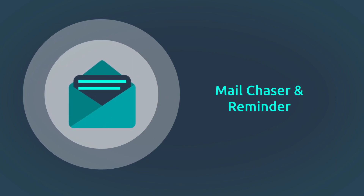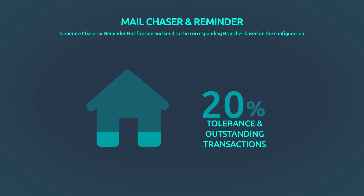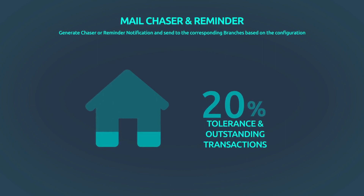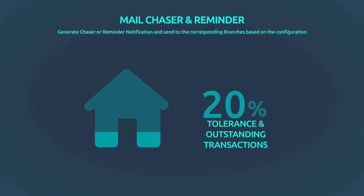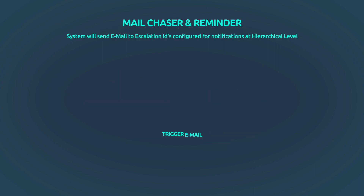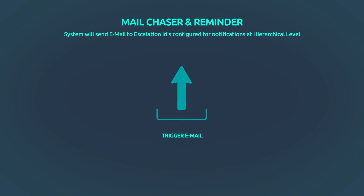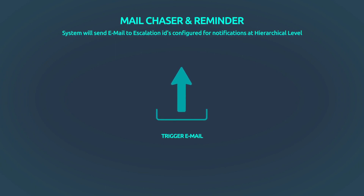Another outstanding feature of Star Nostro is mail chaser and reminder. Star Nostro will generate chaser or reminder notifications for tolerance and outstanding transactions and send them to the corresponding branches based on the configuration. It can also send multiple transaction reminders to branches, with emails triggered based on escalation and email IDs configured at a hierarchical notification level.